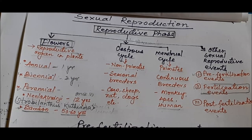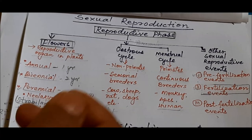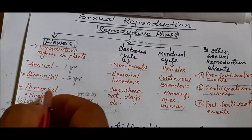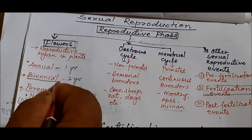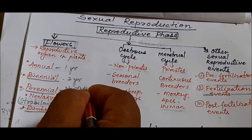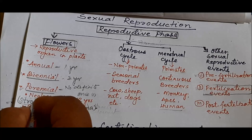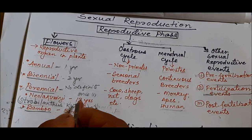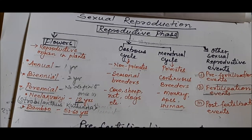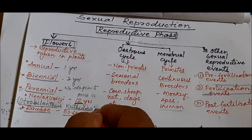Not all plants flower every day. In some plants, flowers appear once in a year — those are called annual plants. When the flower comes once in two years, the plants are called biennials. In perennial plants, there is no definite time. One important example is Neelakurinji, which flowers once in 12 years.